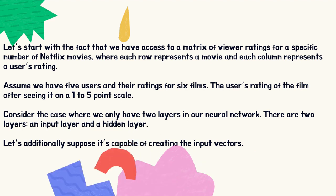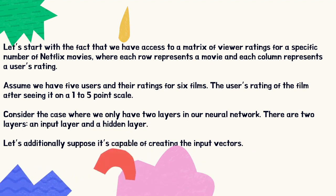Let's start with the fact that we have access to a matrix of viewer ratings for a specific number of Netflix movies, where each row represents a movie and each column represents a user's rating. Assume we have five users and their ratings for six films, on a one to five point scale after seeing each film.